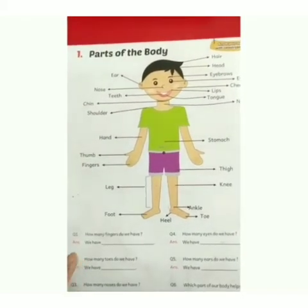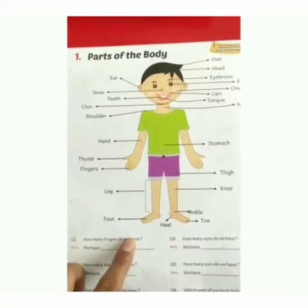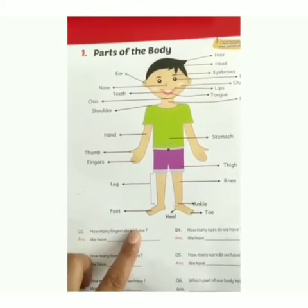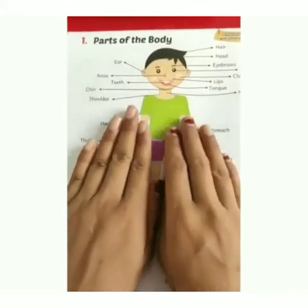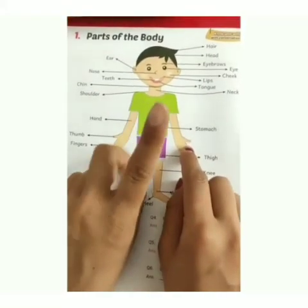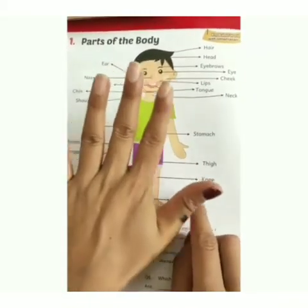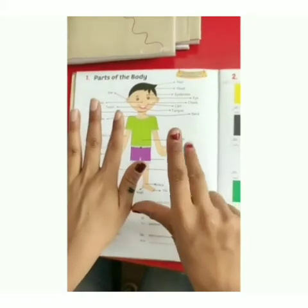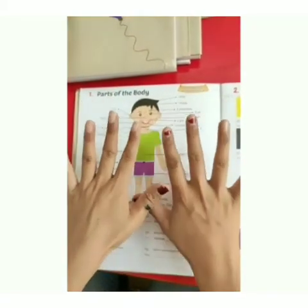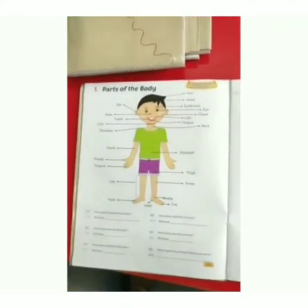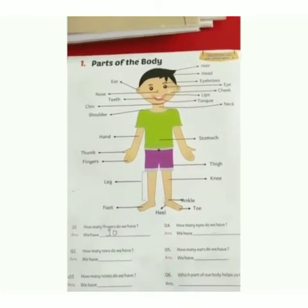Our first question is: how many fingers do we have? So kids, tell me, how many fingers do we have? Count your fingers. Count like this: 1, 2, 3, 4, 5, 6, 7, 8, 9, 10. We have 10 fingers in our hands.